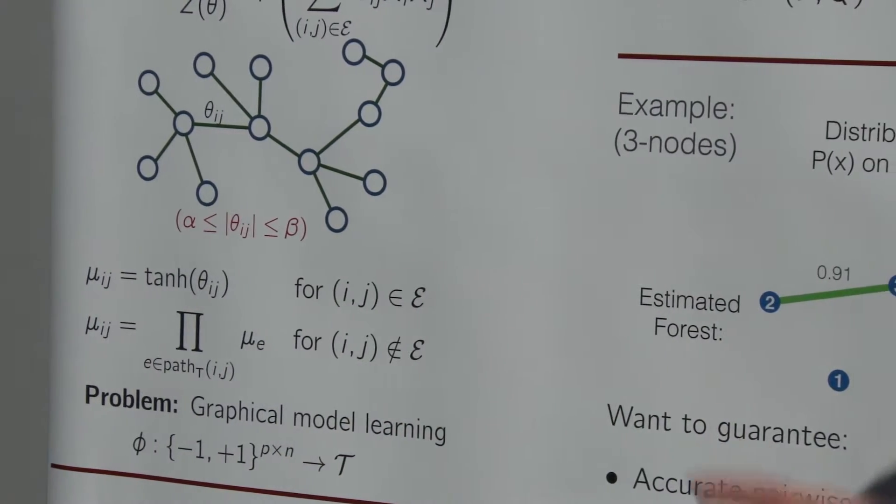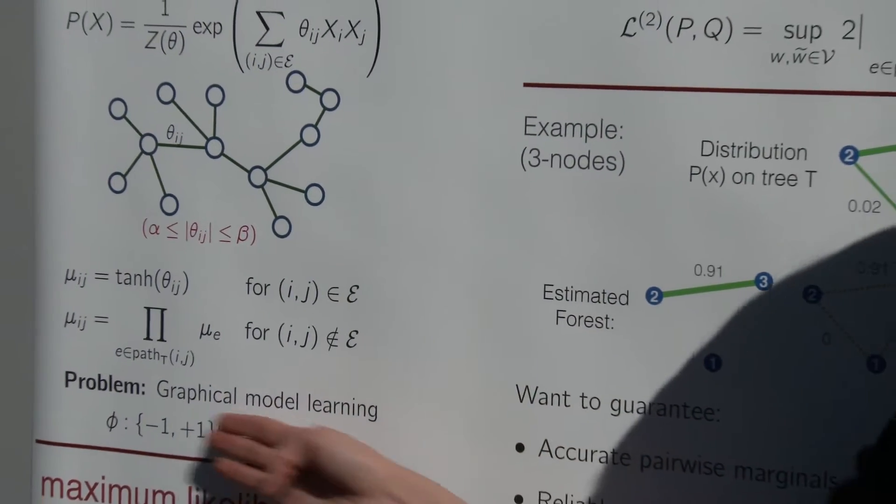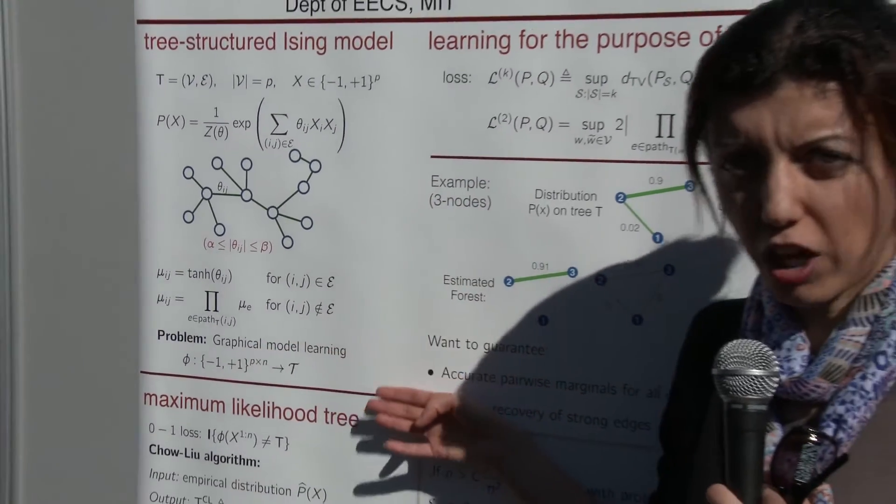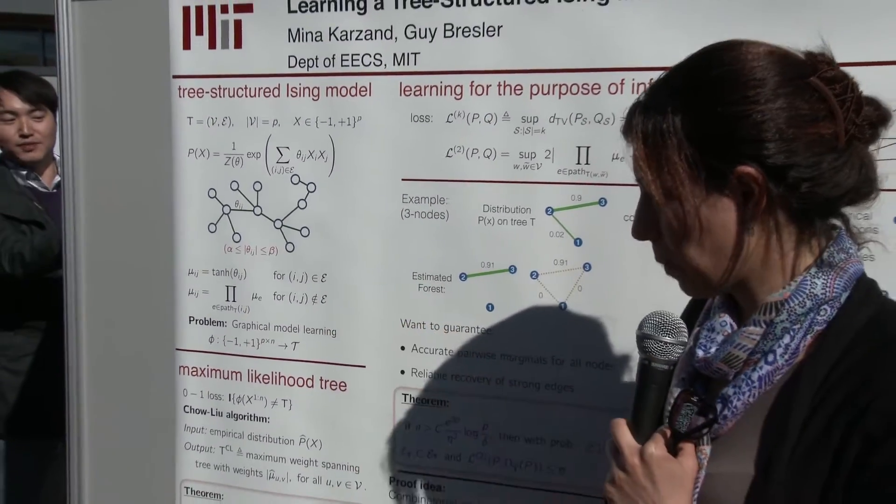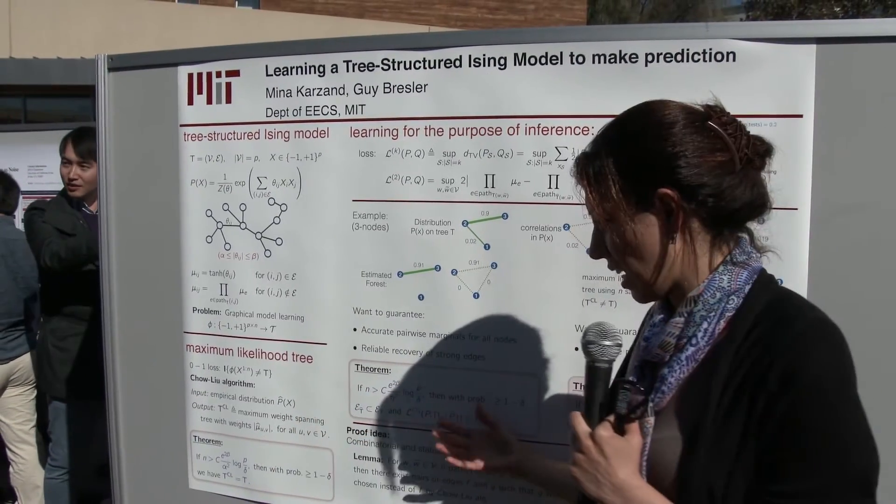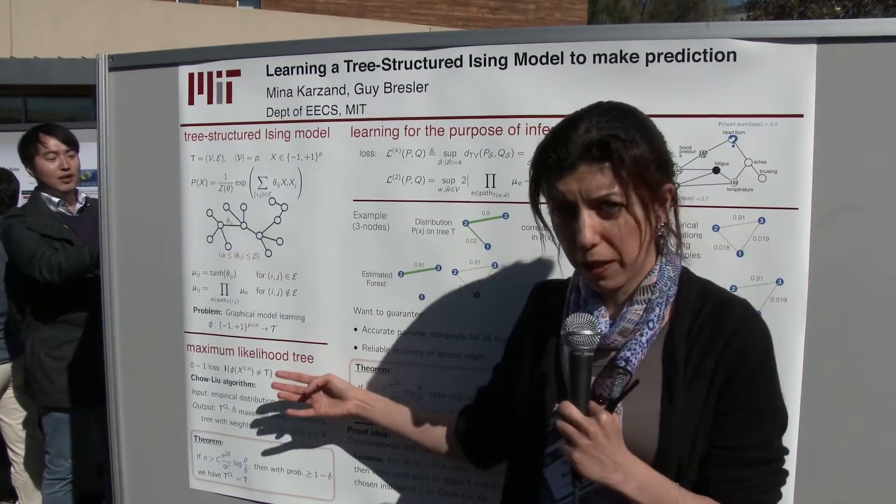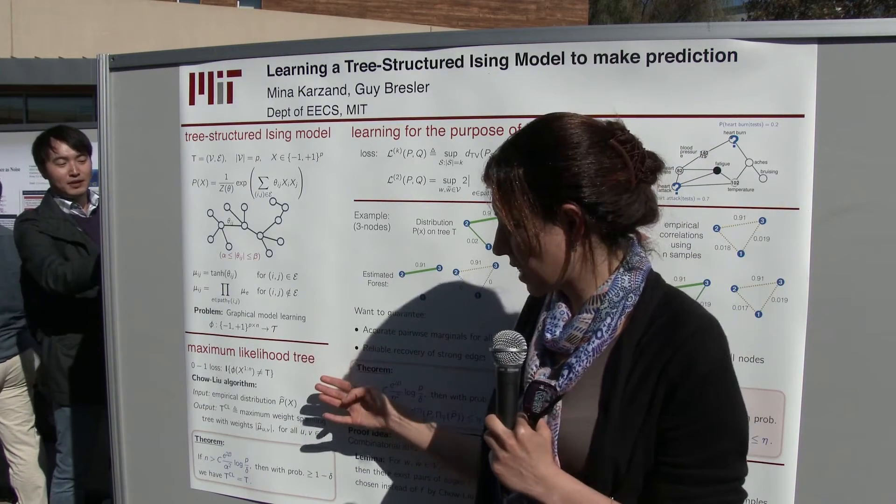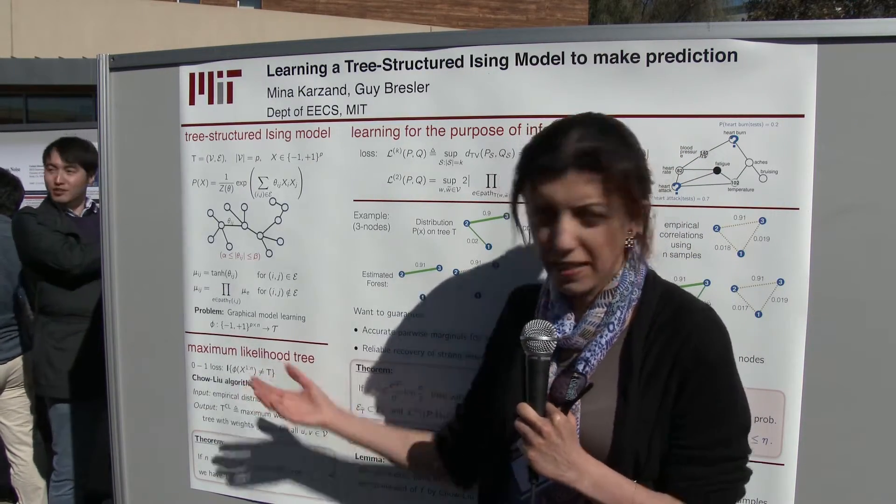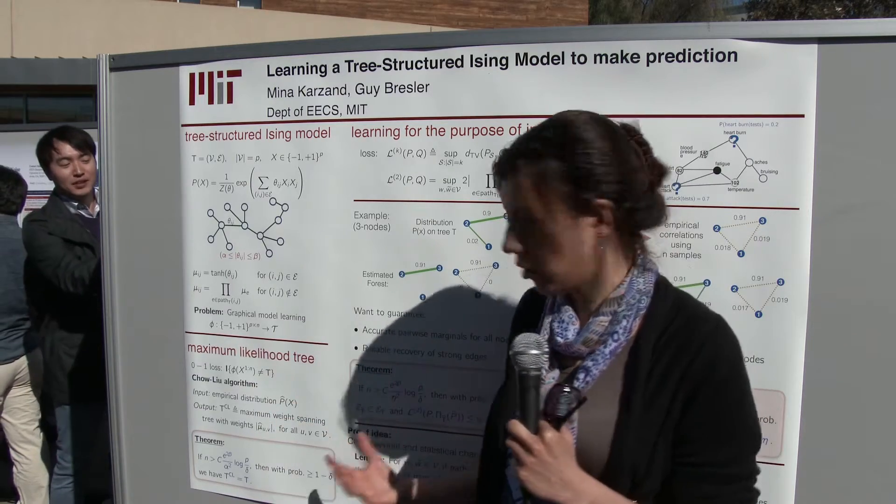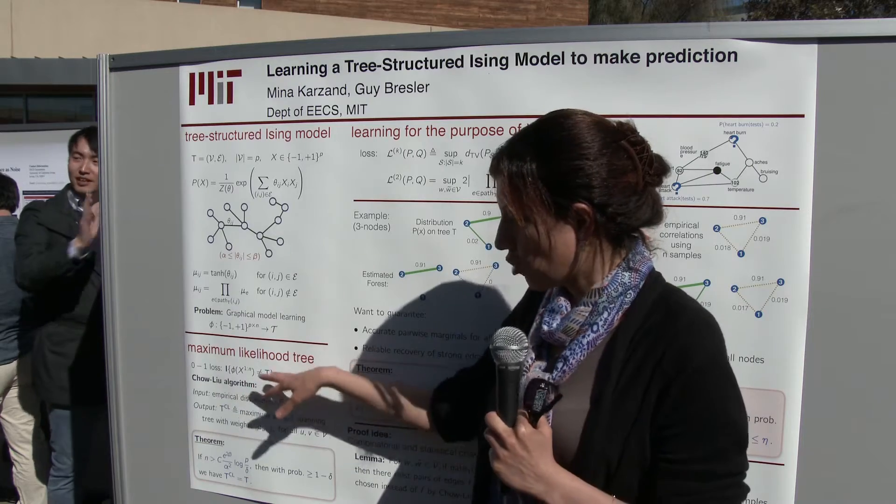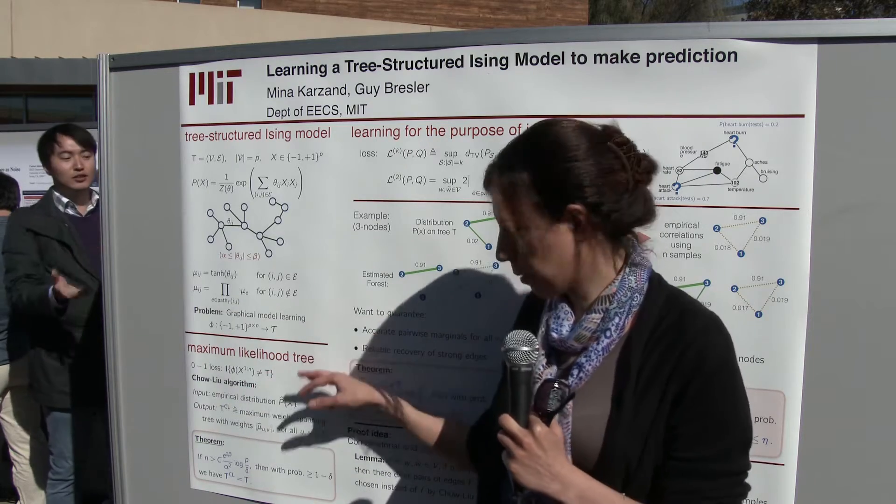Usually, the purpose of the graphical model learning is taking n samples from this distribution and learning the underlying structure behind it, which is a tree. So there's a classic work from 1968, which is the Chalu paper, which basically looks at the maximum likelihood tree. This is basically the zero one loss function. The goal is trying to recover the correct tree with high probability.